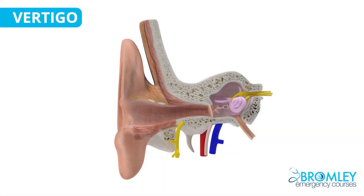We're now going to move on to vertigo. We'll first go through the neuroanatomy of balance, covering both the peripheral and central components. We'll then look at vertigo and its various causes, including vestibular neuronitis, benign paroxysmal positional vertigo, acoustic neuromas, and central causes such as vascular causes and tumours. We'll discuss how to differentiate between central and peripheral causes, relevant procedures like the Dix-Hallpike and Epley's manoeuvre, and symptomatic treatments.